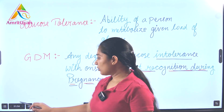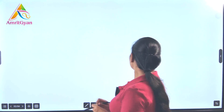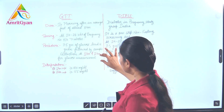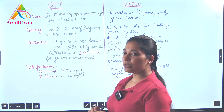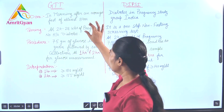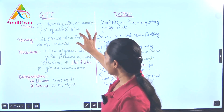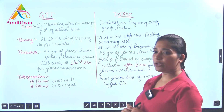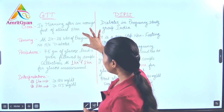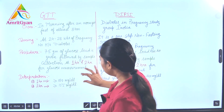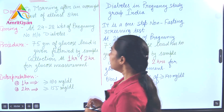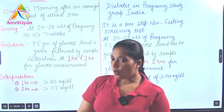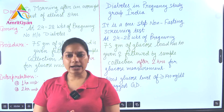Now we will discuss GTT and DIPSI in detail. GTT stands for Glucose Tolerance Test and DIPSI stands for Diabetes in Pregnancy Study Group India. The timing for GTT — it is done in the morning after an overnight fast of at least 8 hours.